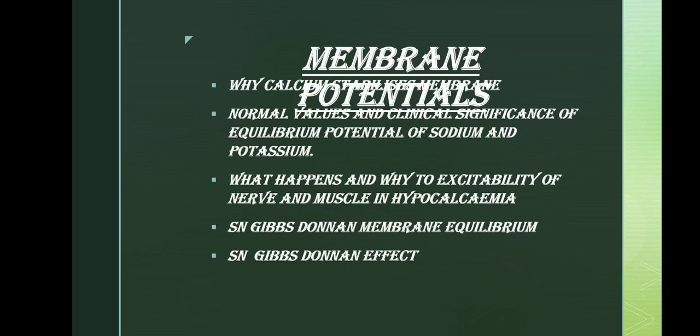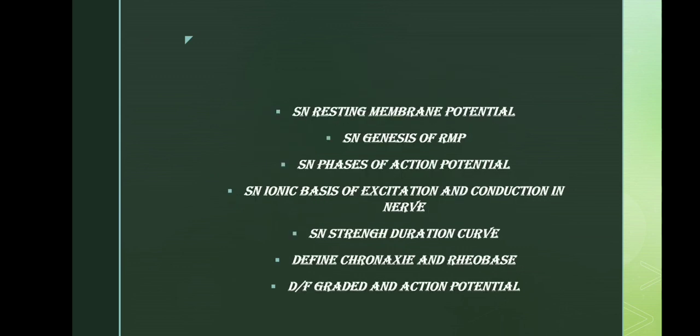From the membrane potential chapter, important questions include: why calcium is needed for membrane stability; normal values and clinical significance of equilibrium potential of sodium and potassium; what happens and why to excitability of nerve and muscle in hypocalcemia. Short note on resting membrane potential, genesis of resting membrane potential, phases of action potential, ionic basis of excitation and conduction in nerve, strength-duration curve, define chronaxi and rheobase, and differences between graded and action potential are all important.